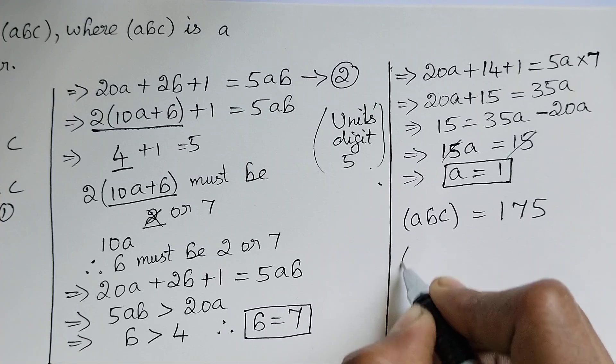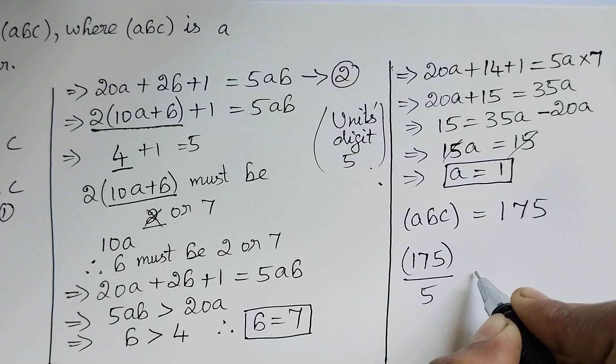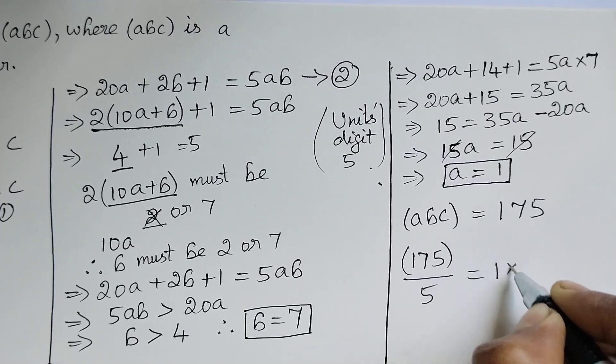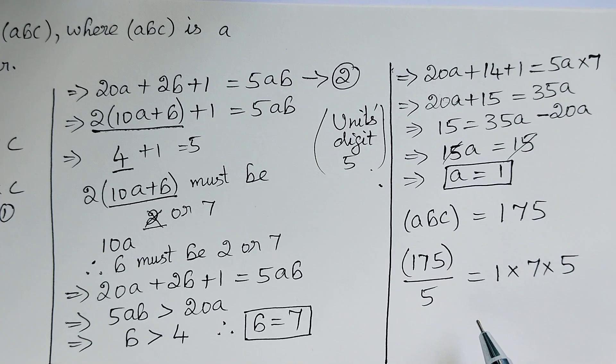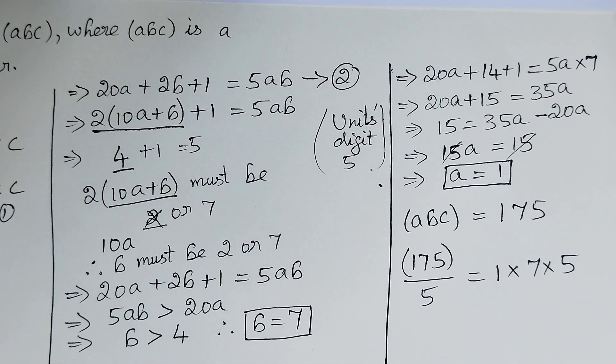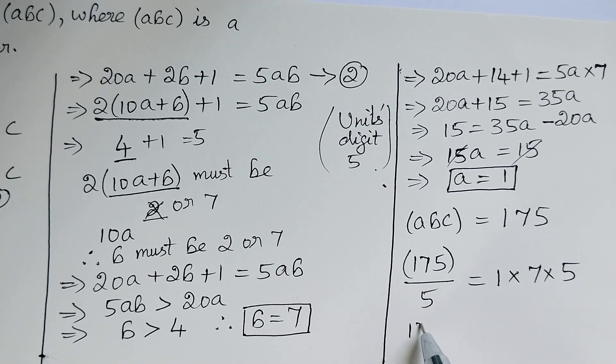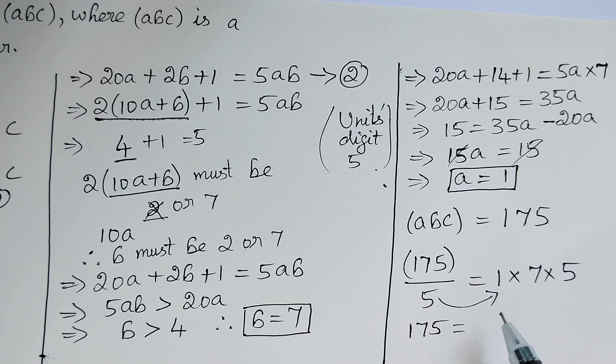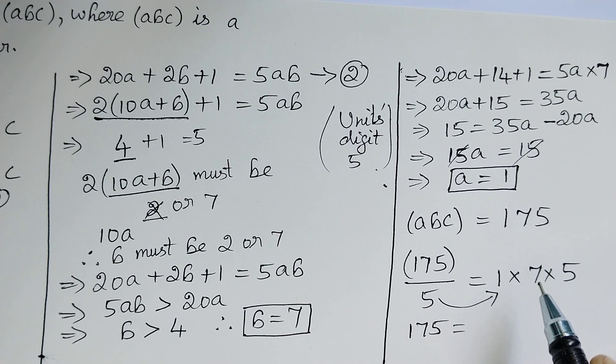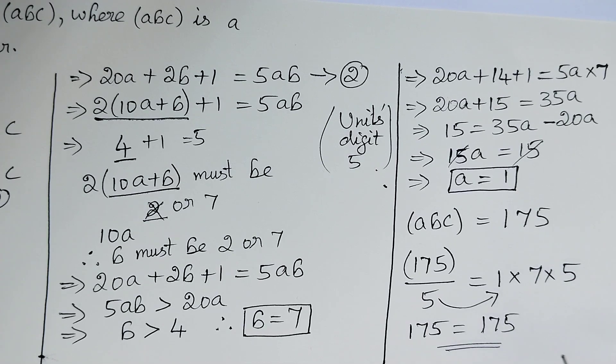That is 175 divided by 5 is equal to 1 × 7 × 5. Here we get 175 = 5 × 5 × 7 = 25 × 7 = 175. Yes, we got the right answer.